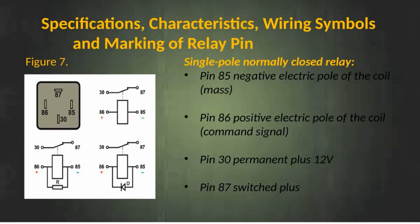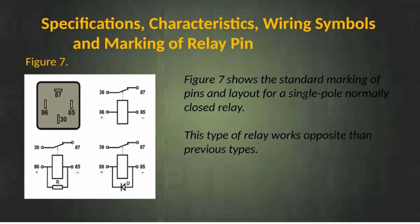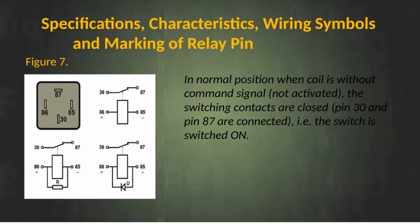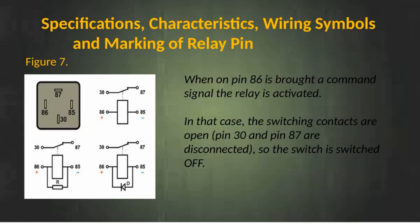Single pole normally closed relay. Pin 85 — negative electric pole of the coil; Pin 86 — positive electric pole of the coil; Pin 30 — permanent plus 12 volts; Pin 87 — switched plus. Figure 7 shows the standard marking of pins and layout for a single pole normally closed relay. This type of relay works opposite to previous types. In normal position when the coil has no command signal, the switching contacts are closed — pin 30 and pin 87 are connected, that is the switch is on. When on pin 86 a command signal is brought, the relay is activated; the switching contacts open — pin 30 and pin 87 are disconnected — so the switch is switched off.